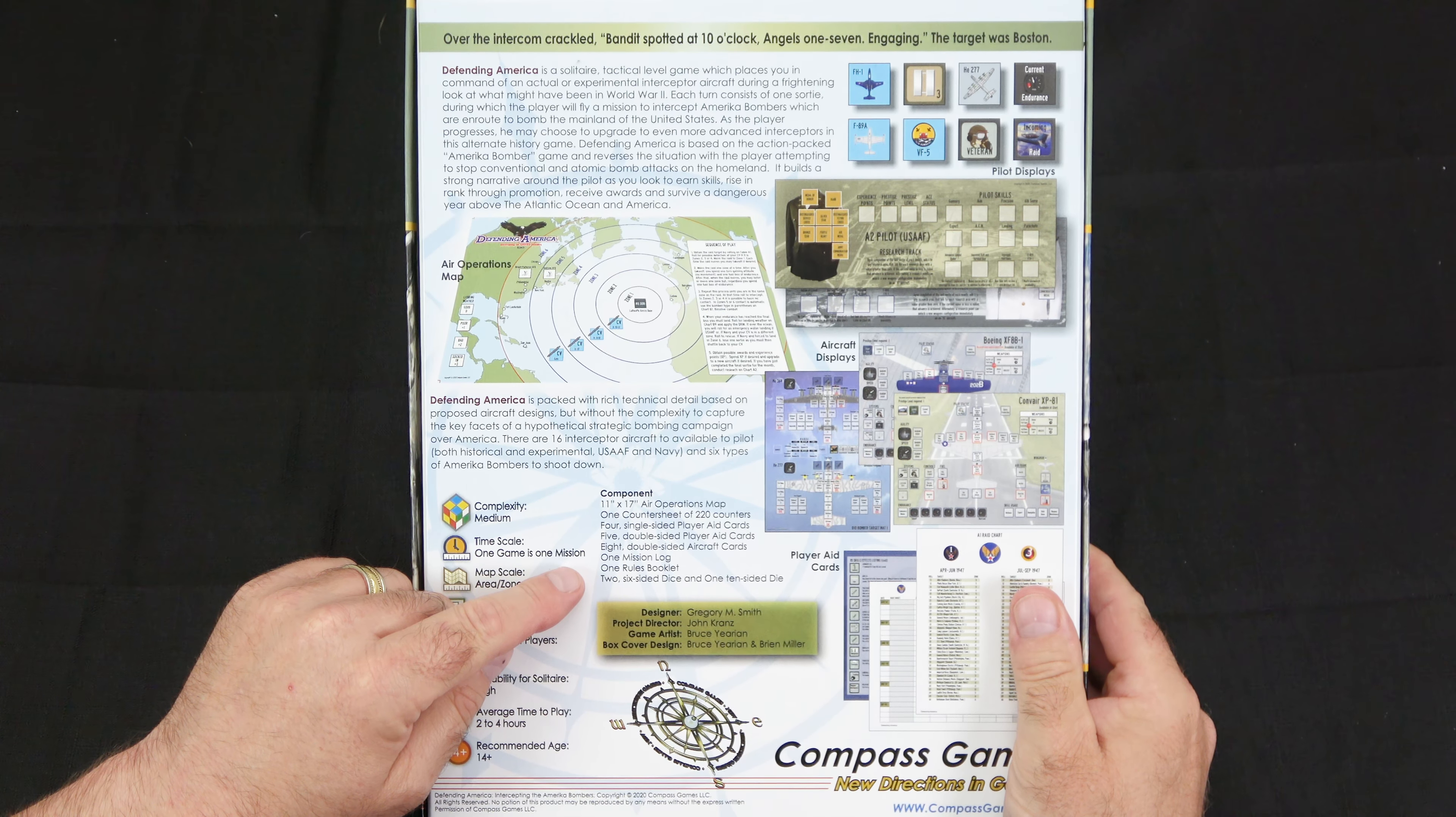On the back, we have the skills effects listing, the fighter damage chart, landing chart, parachute chart, and the weather landing chart.